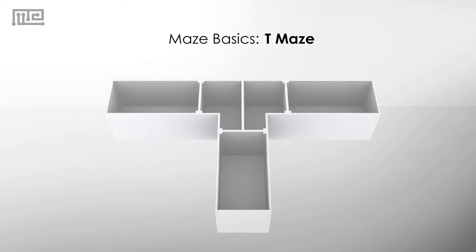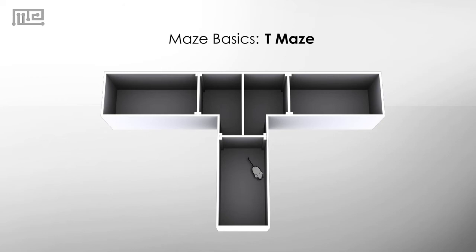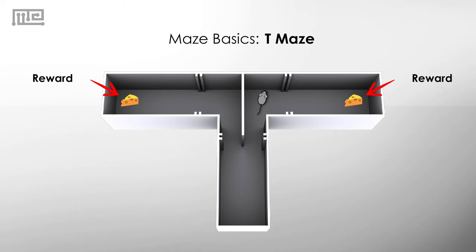Evaluation of spatial learning using spontaneous alternation. For this version, the mouse is not familiarized prior to testing, promoting exploration and alternation. Food rewards are again placed in both goal arms, but now all doors start open.